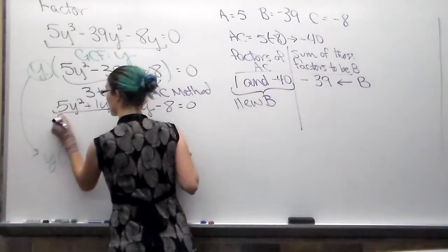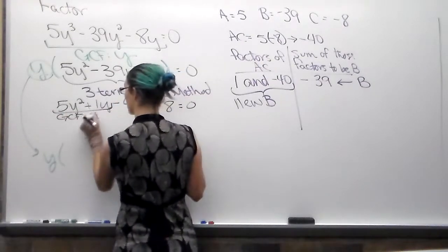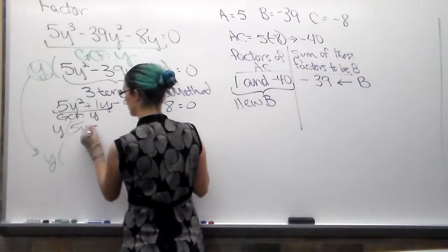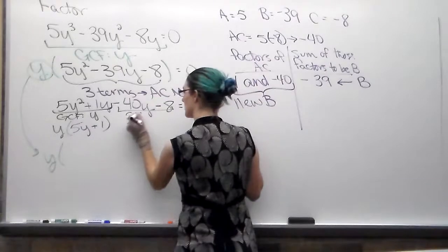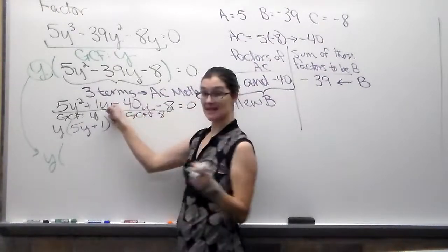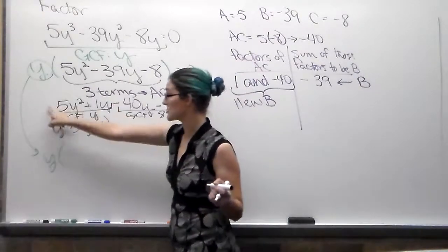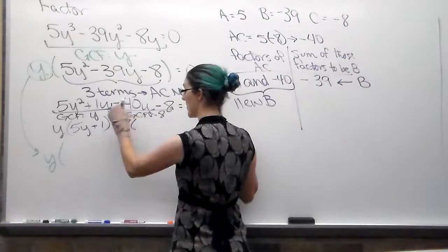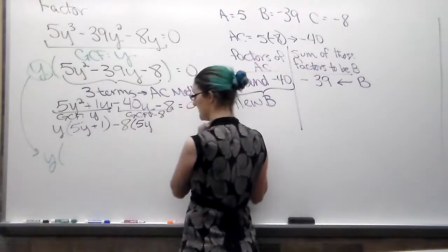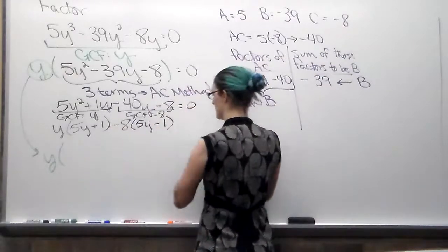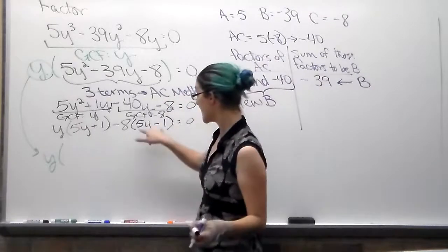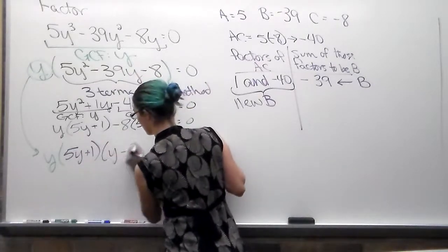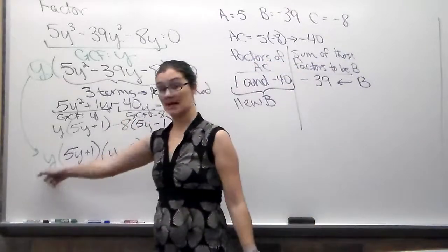Do grouping. GCF is just a y. So I'm going to take a y out, be left over with 5y plus 1. Over here, GCF is 8, but always take whatever the first sign is. If that first sign is positive, your GCF is positive. If this first sign is negative, it's going to be a negative. So negative 8. If we do negative 40y divided by negative 8, that's going to be positive 5y. Negative 8 divided by negative 8 is positive 1. Remember, these have to be the same because your next step, we're taking these out. And then what's going to be left over? Y minus 8. Make sure these factors get put down with your y. Don't forget about that y.